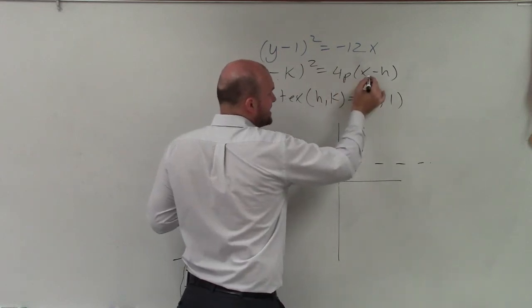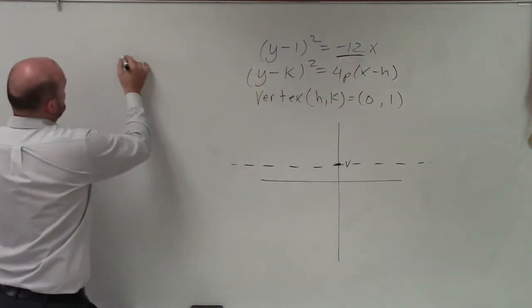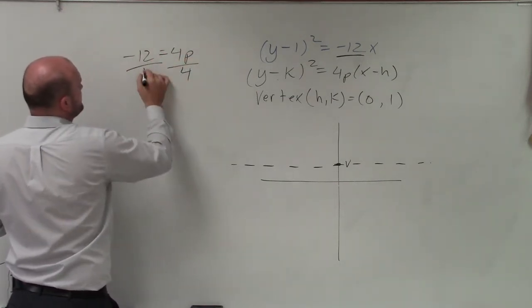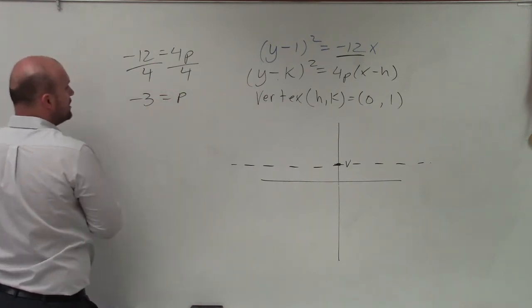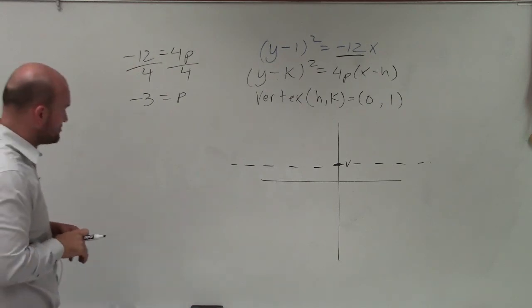And what we notice is we have 4p times x. So negative 12 is equal to 4p. So I write the equation, negative 12 is equal to 4p. Divide by 4, divide by 4. Negative 3 equals p.